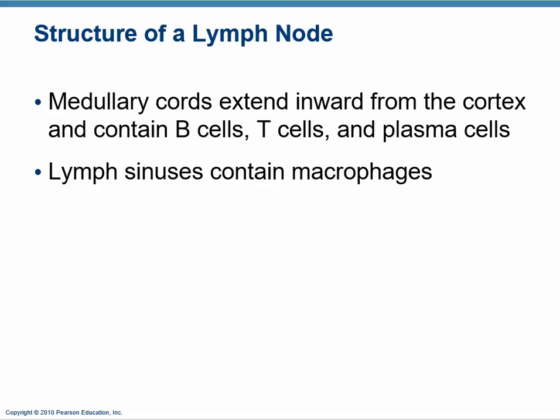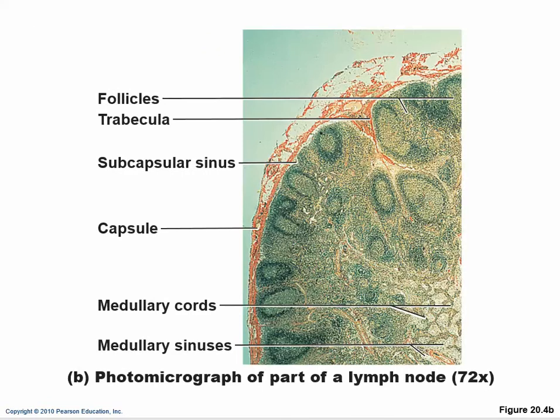In the middle there's the medulla. This is where B cells, T cells, and plasma cells — which are activated B cells — are normally found. This is also where the macrophages are. There are sinuses, spaces in the medulla where macrophages can chase down and eat their prey.